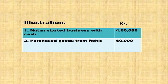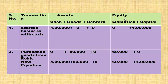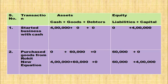Northern started business with cash rupees 4,00,000. Purchase goods from Rohit rupees 60,000 on credit. In the cash column add 4,00,000 and in the capital column add 4,00,000. For the second transaction, goods are coming inside the business, so in the goods column add 60,000, and since goods are purchased on credit, creditors increase — add liability 60,000. New accounting equation: cash 4,00,000 plus goods 60,000 equals liabilities 60,000 plus capital 4,00,000. Total 4,60,000 on both sides — accounting equation is satisfied.